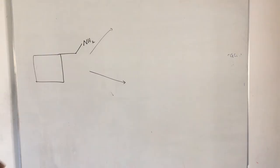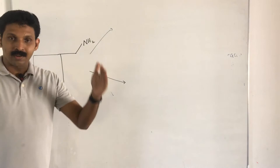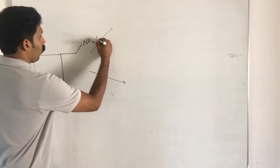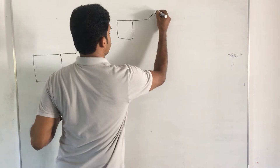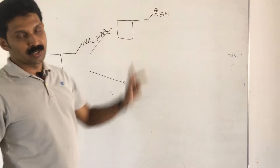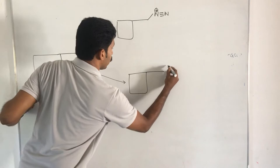This compound may undergo two pathways. In both pathways, on reaction with HNO2, the first step gives a diazonium salt — that is, the species with N triple bond, written as N₂⁺.